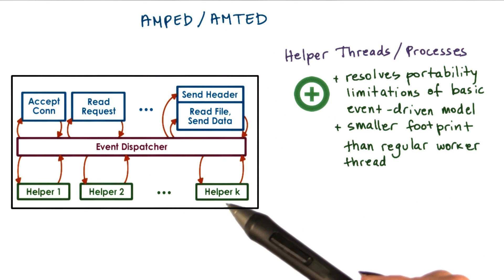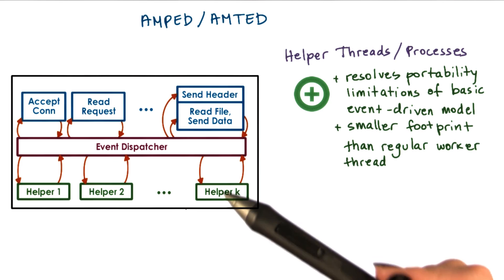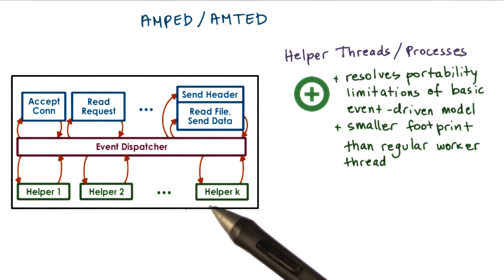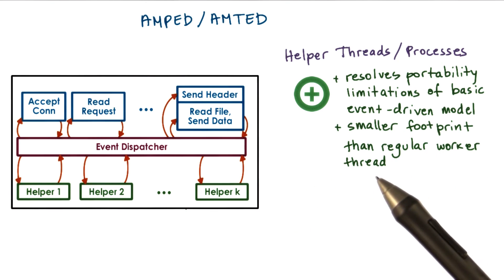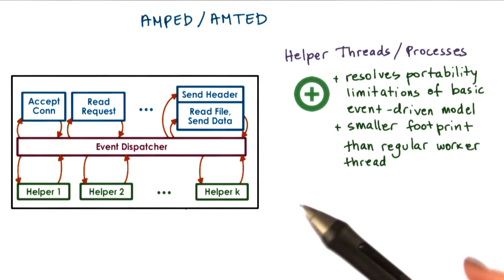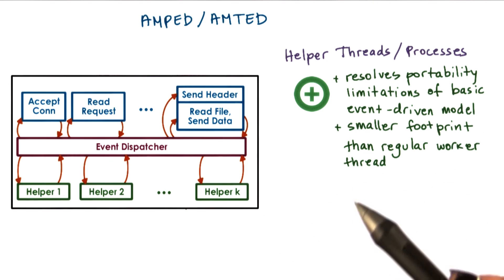Whereas in the multithreaded or multiprocess models, we will have as many concurrent entities, as many processes or as many threads as there are actual concurrent requests, regardless of whether they block or not.